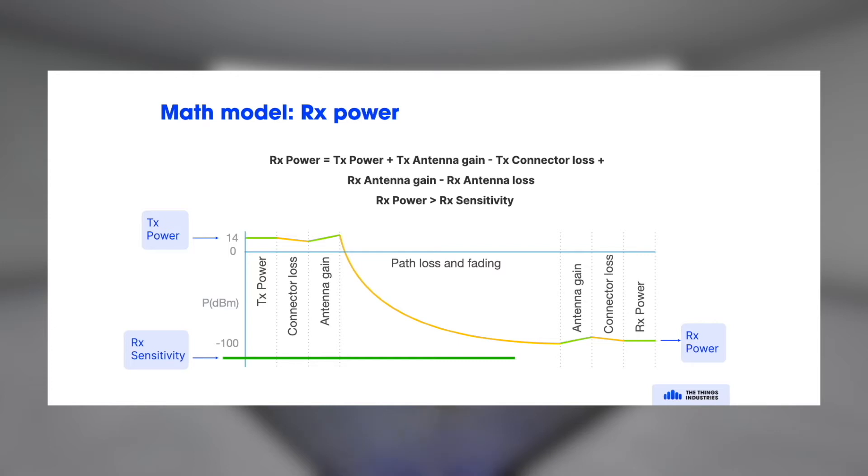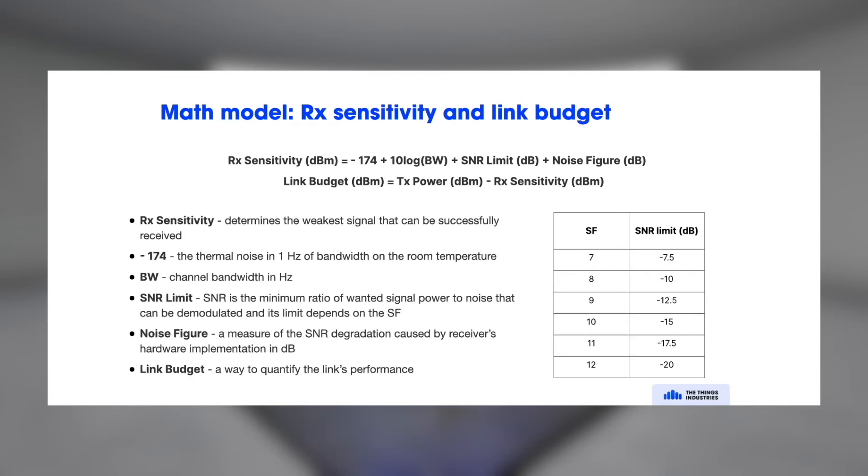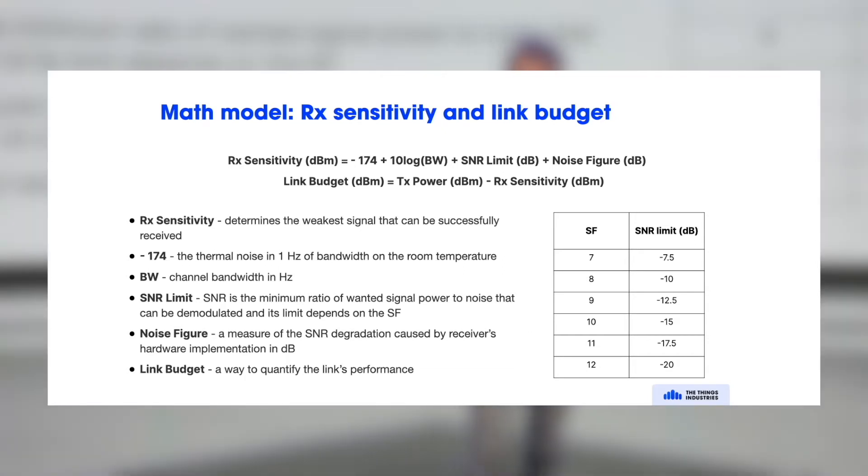So the receiver sensitivity is also a formula. It takes into account thermal noise of the bandwidth, in this case room temperature, the bandwidth that's used. So here the spread spectrum aspect of LoRa is handy, because that's a high bandwidth.